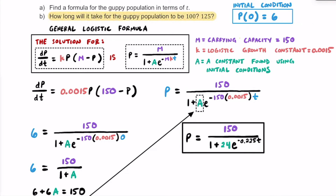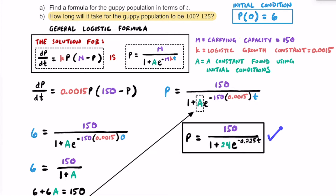Part B is asking us how long it will take for the guppy population to reach 100 or 125 guppies. When they ask 'how long,' they're asking us to solve for t — the amount of time measured in weeks. The first condition is when the population is 100, so we solve for t when p equals 100. Then we solve for t again when the population is 125 guppies. We'll use the formula from Part A to figure out how long it takes to reach both populations.